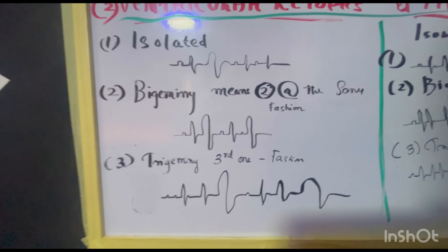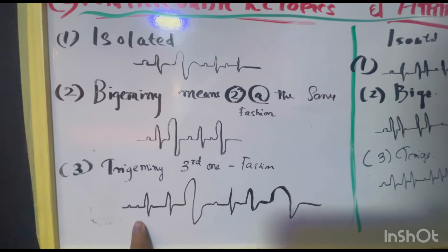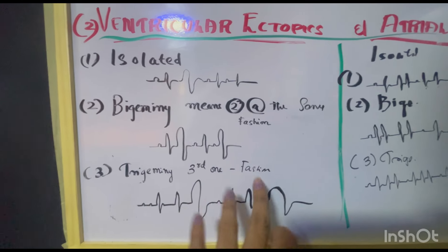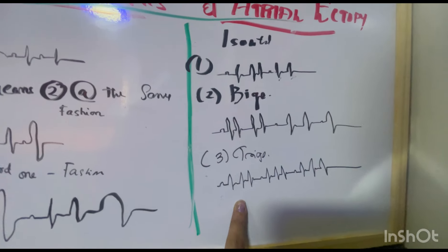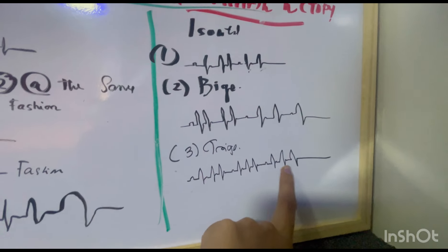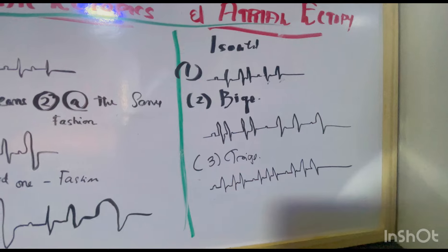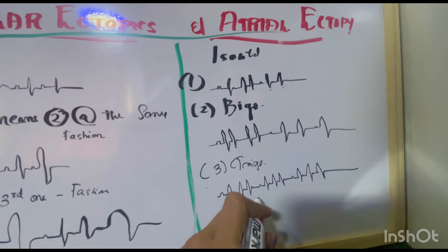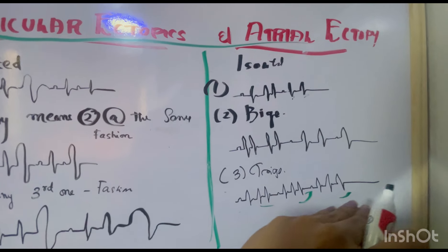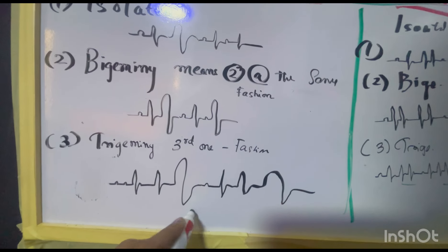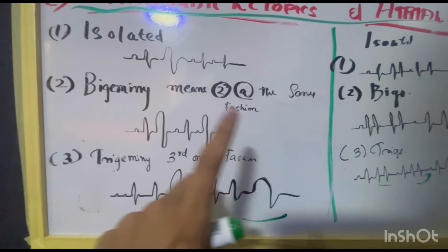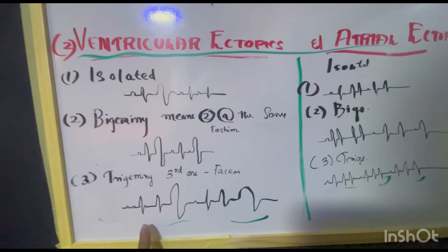Trigeminy: similar to bigeminy but the third beat is abnormal. Normal, normal, ventricular ectopy — that is trigeminy, the third one is the ventricular ectopy. In atrial trigeminy it is the same: normal, normal, extra beat causing resetting rhythm, normal, normal, extra beat resetting rhythm. You can see the third beat is causing all the rhythm to change in a similar recurring fashion.